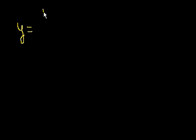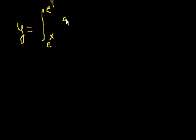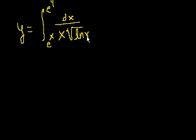I just want to clear up some confusion that might have happened because of one of the problems in the last video, and it's a good chance to understand things a little bit more deeply. So one of the problems I did in the last video was the definite integral from e to the x to e to the fourth of dx over x times the square root of ln x.